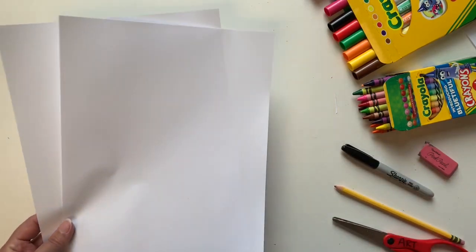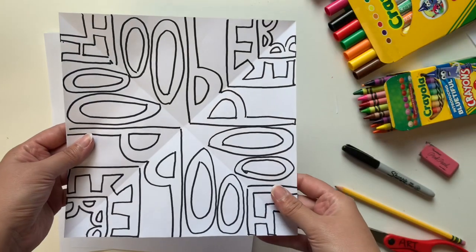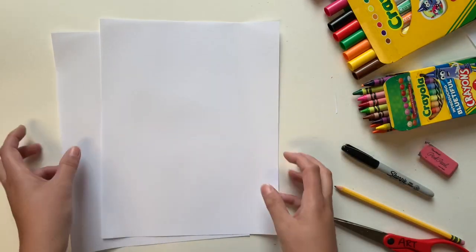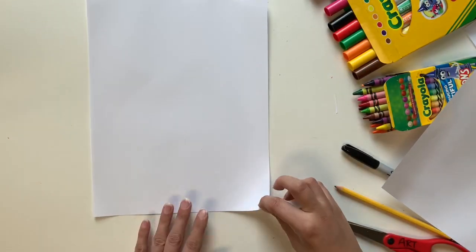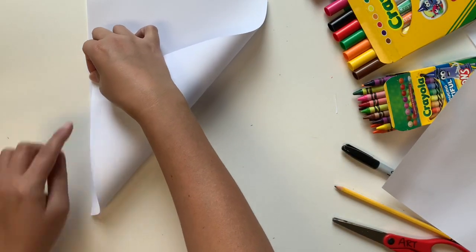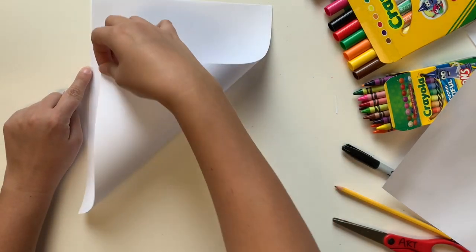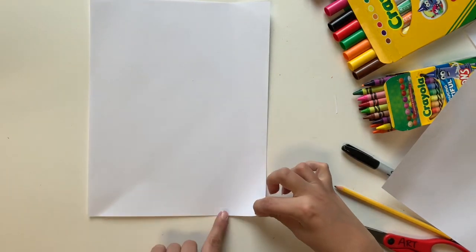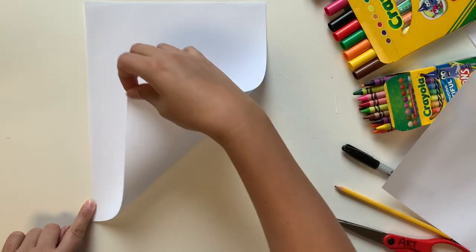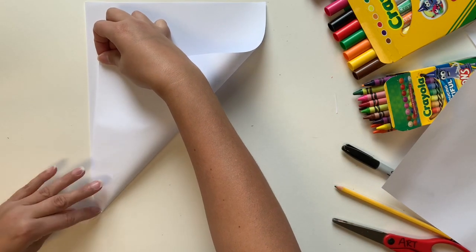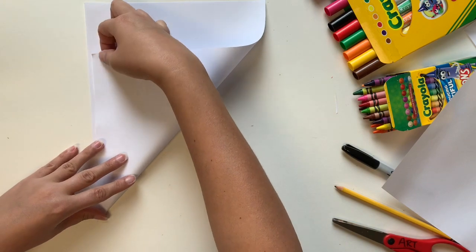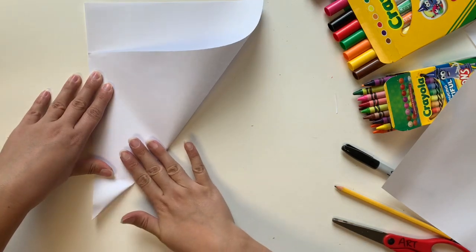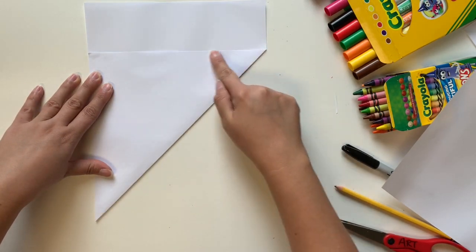The first thing that we need to do is we need to create two squares. Regular copy paper is a rectangle. So to make a square out of a rectangle, you're going to take the bottom corner and pull it up to the left side, matching up this bottom side with the side without overlapping the corner. Hold it still with one hand so it doesn't slide around, then use your other hand to smooth out to this edge. So now I can see a nice triangle.